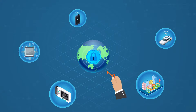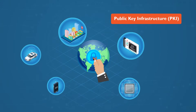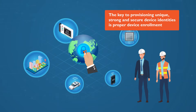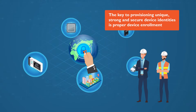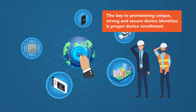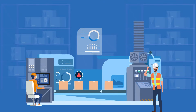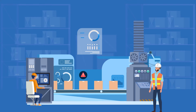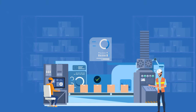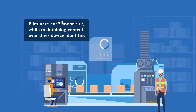IoT chip and device manufacturers, as well as critical infrastructure operators, rely on the proven security of Public Key Infrastructure to protect their IoT ecosystems. They know the key to provisioning unique, strong and secure device identities is proper device enrolment. But PKI device enrolment can be tricky. Standards are immature or non-existent and without highly skilled managers on-premise, enrolment practices could leave gaps in security, compromising the entire IoT ecosystem.